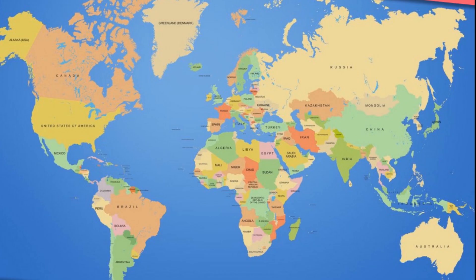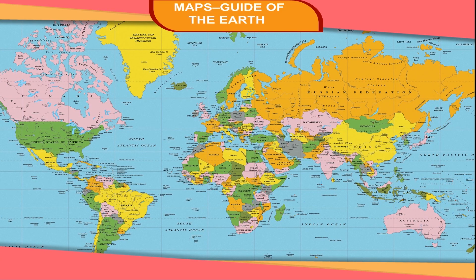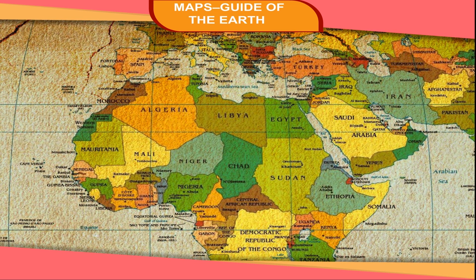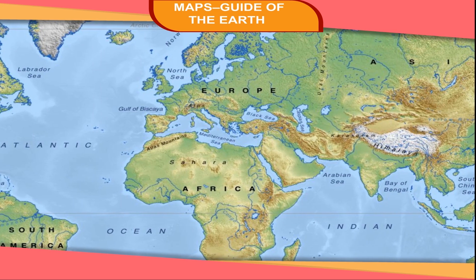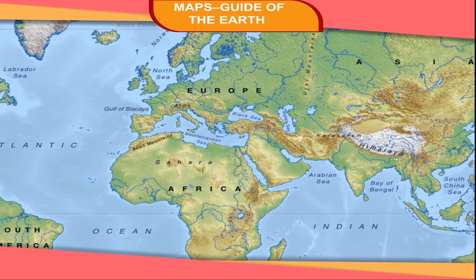A map is a representation of the Earth's surface or part of it on a flat surface. It can be drawn on a paper, on a wall, or on a board. Maps can show countries and cities of the world in great detail.